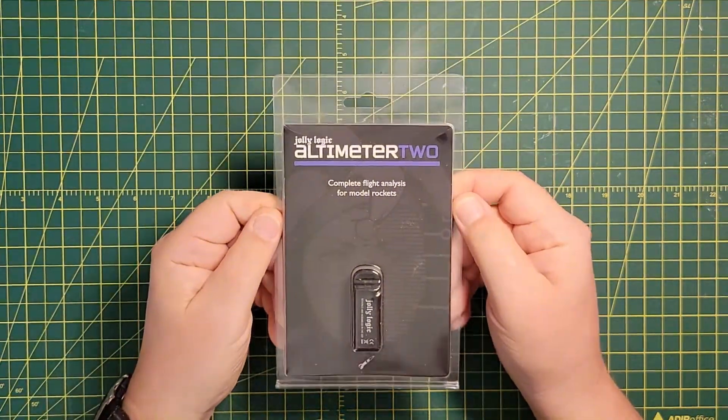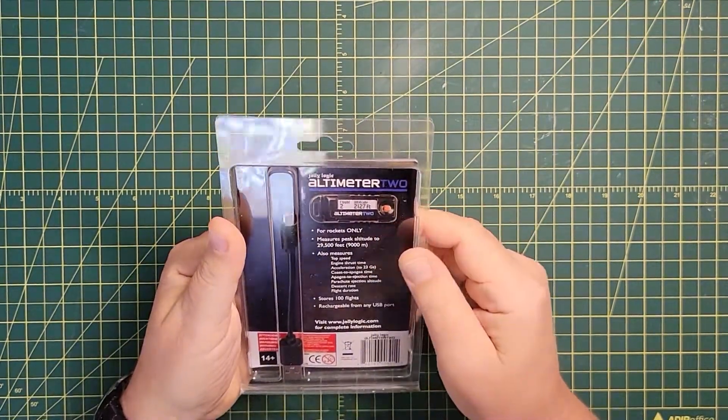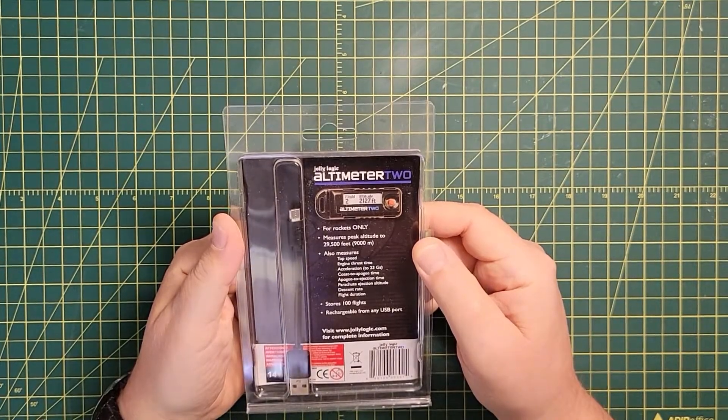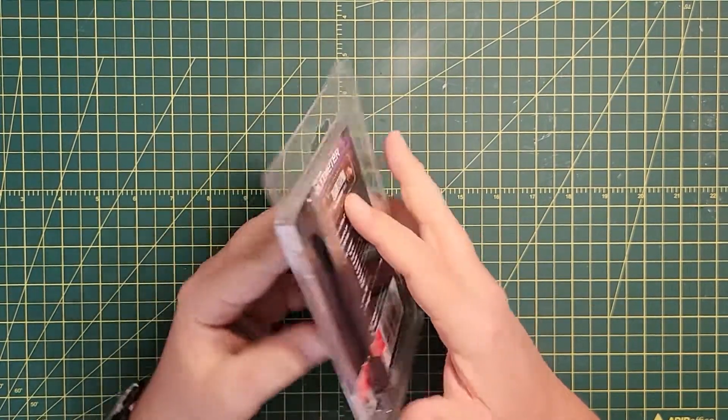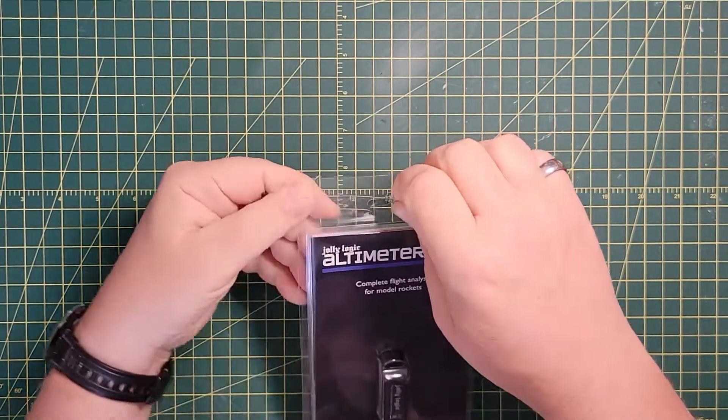So the first thing I got was this Jolly Logic Altimeter 2. There's three in the series. There's a 1, there's a 2, there's a 3. The 1 is really basic. The 2 has a lot of flight information and the 3 is Bluetooth enabled.